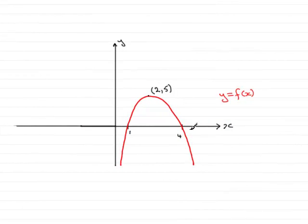Now in this part of the question we're given y equals f of x as the curve here with the maximum point at 2, 5.